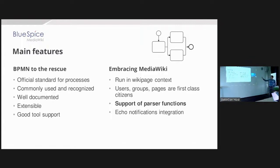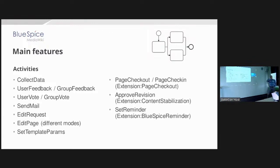There are also other integrations: we integrate into Echo for notifications, so if you are assigned to an activity you will be notified. We interact heavily with MediaWiki entities like users, groups, and pages, so you have UI elements like pickers for those. The extension comes with a set of predefined activities — in the BPMN world these are called tasks or activities interchangeably — and each box in the diagram is some kind of activity.